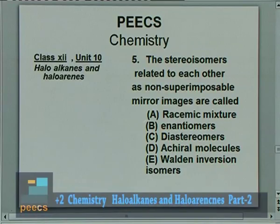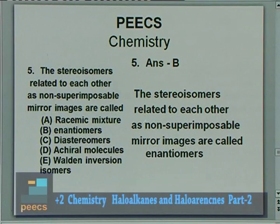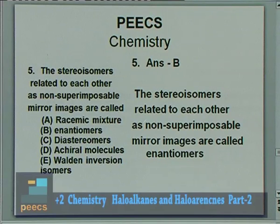Question 5: Stereoisomers related to each other as non-superimposable mirror images are called — options are: racemic mixture, enantiomers, diastereomers, achiral molecule, Walden inversion isomers. The correct answer is B — enantiomers. Stereoisomers related to each other as non-superimposable mirror images are called enantiomers.